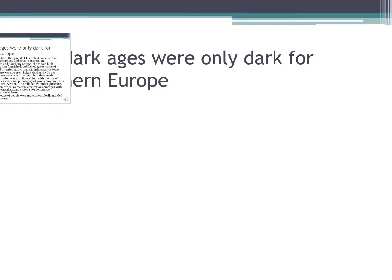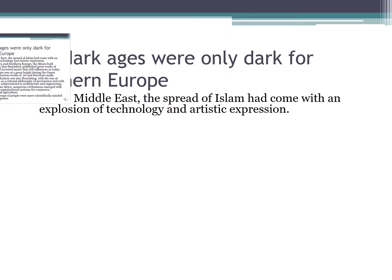Those were the Dark Ages — however, they were only dark for Europe. The spread of Islam had come with an explosion of technology and artistic expression. It being dark in Europe does not mean it was dark in the Middle East. The Islamic peoples invaded parts of southern Europe, most notably Spain, and successfully occupied it for centuries. Near the palace of Alhambra, they had street lamps, running water, and a level of technology not seen again for seven or eight hundred years in the rest of Europe.